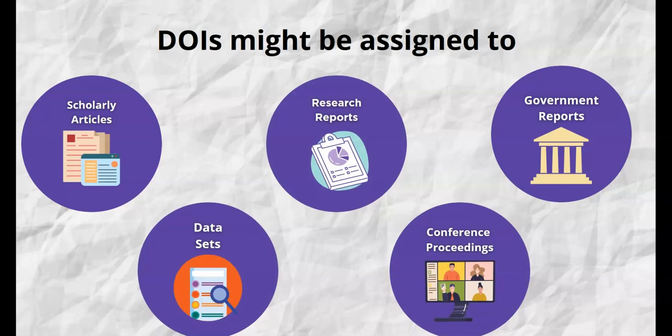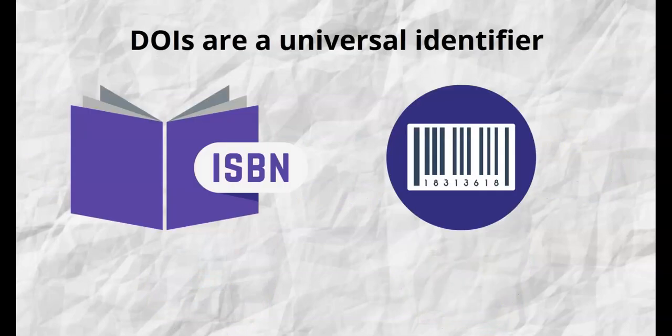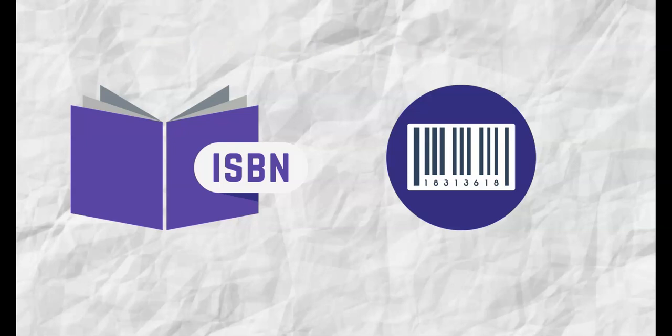Objects with a DOI do not need to be digital but most often are, and include scholarly articles, research reports, governmental reports, datasets, conference proceedings, and more, and provide a persistent link to that content on the internet. Essentially you can think of a DOI as a universal identifier to help you locate and identify primarily digital content, similar to how a barcode identifies a product or an ISBN is found on a book.